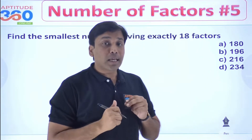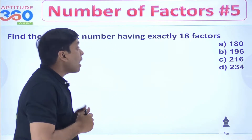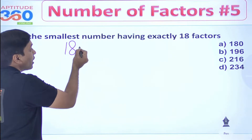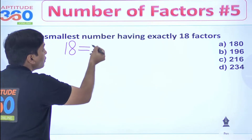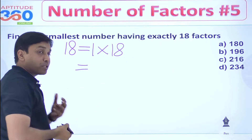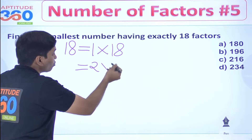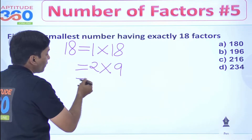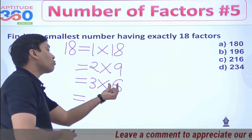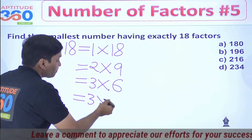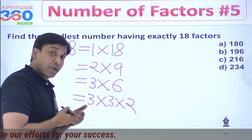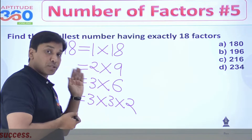If a number has to have 18 factors, first find out in how many ways we can write 18 as a product of numbers. So that is going to be 2 into 9. We can also write it as 3 into 6, or we can factorize it as 3 into 3 into 2. These are the only possibilities in which we can write 18 as an outcome of certain products.